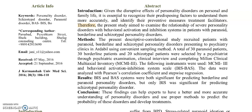So because of this problem, therefore this is the aim of the study. We can use the words aim, purpose, objective, or goal. This explains why they're doing the study. 'The present study aimed to examine the relationship of severe personality disorders with behavioral activation and inhibition systems in patients with paranoid, borderline, and schizotypal personality disorders.' Generally, in an academic article, you'll find the aim at the very beginning, or sometimes in the second or third sentence. If the problem is stated first, the aim will follow.